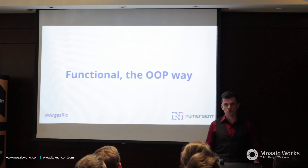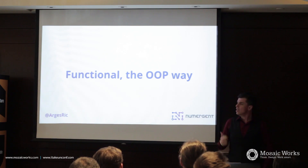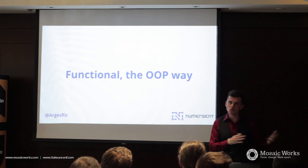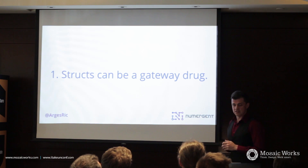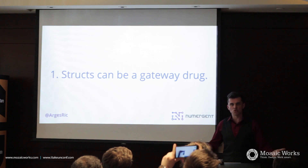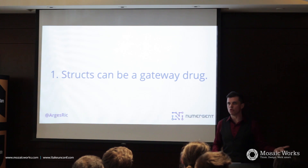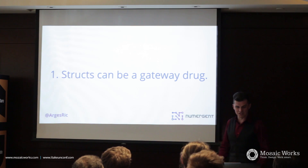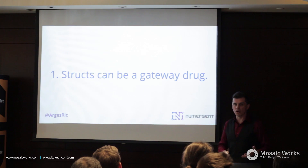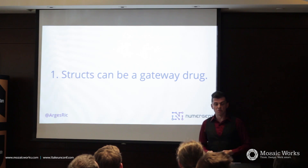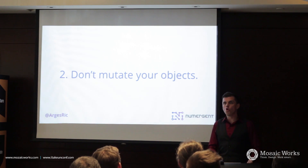Let's talk about how to do functional programming in an object-oriented language. I'm going to go over four very simple principles, focusing mostly on C# and Java. The first is that in .NET, structs can act as a gateway drug. The language by default enforces passing them as value, not reference. But classes have their advantages, so we need to do things in a way that we can use them with classes, which is where the second principle comes in.